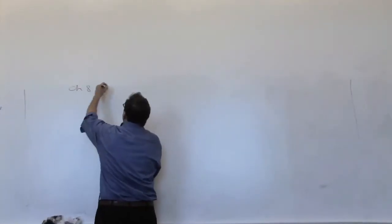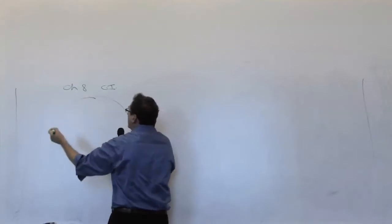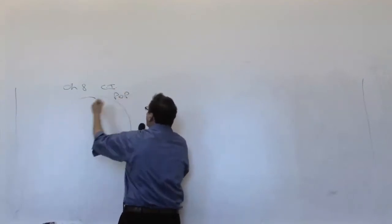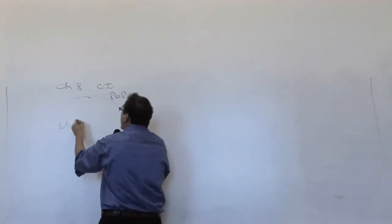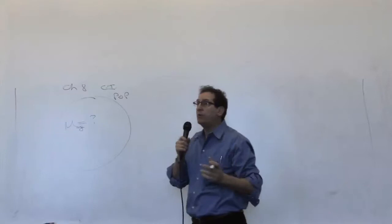Chapter 8, which is called confidence intervals, starts out with the basic problem of you have a population, and you'd like to know something about the average of that population. It could be the average anything - average age, average weight, average height, average number of children in the family.